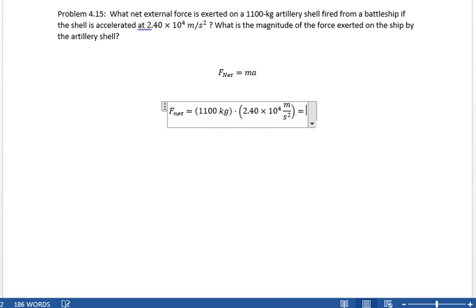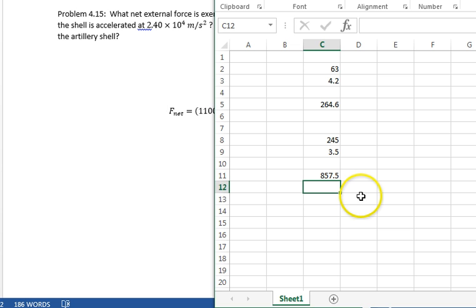Kilograms times the 2.40 times 10 to the 4th meters per second squared. Let's calculate that real quick. We have 1,100 kilograms, 2.4 e to the 4th meters per second squared. We just want their straightforward product.